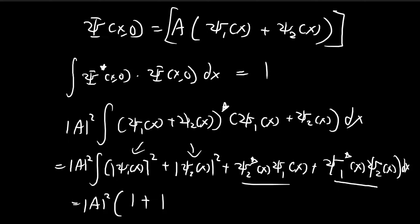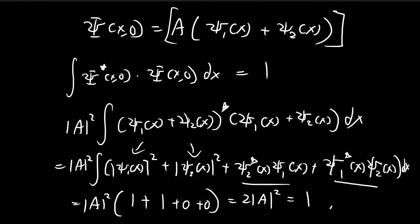By definition, these two are also orthogonal because of the way the sine function works, so both cross terms are equal to 0. The normalized terms each give 1, so we get 2 times the constant squared equal to 1, giving A equal to 1 over the square root of 2. That's how you do part A.